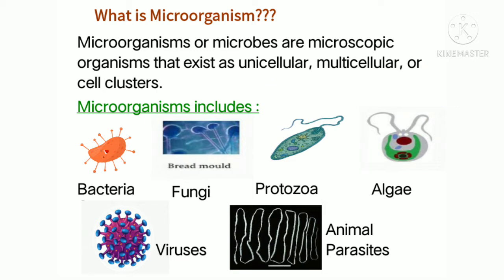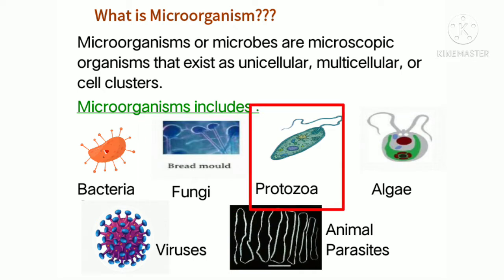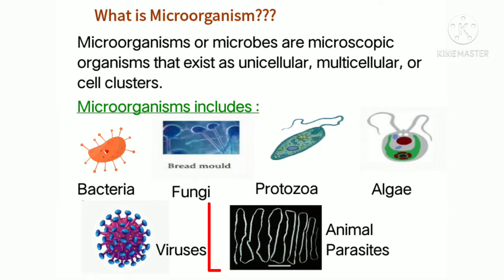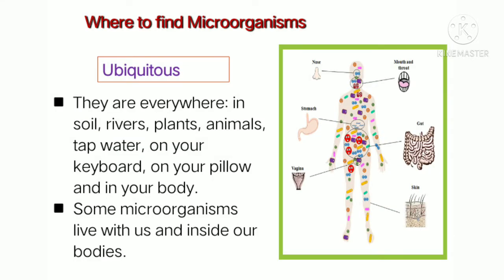The different groups included in microorganisms are bacteria, fungi, protozoa, algae, viruses, and multicellular animal parasites like tapeworm and helminths. A new group called prions is also now added to this group of microorganisms.